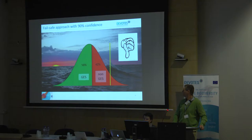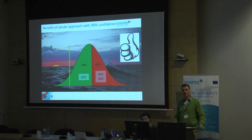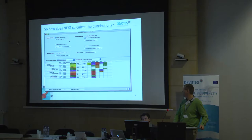There are different approaches to address this uncertainty and include it in decision making. One is taking a precautionary principle — more of a framework directive approach — called the fail-safe approach, which requires that we should be at least 90% confident that we have achieved GES; otherwise it is classified as non-GES. The other approach assumes we have not achieved GES, but if we are 90% sure we have not achieved non-GES, then we can conclude that we have actually achieved GES. That's a precautionary principle for the polluters.